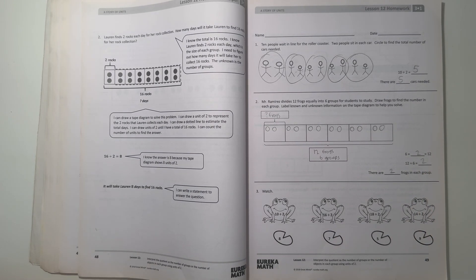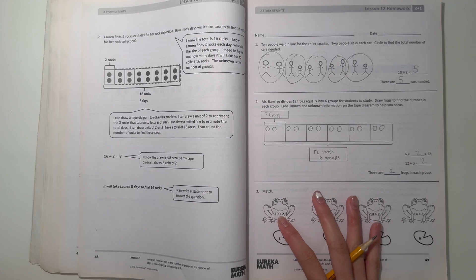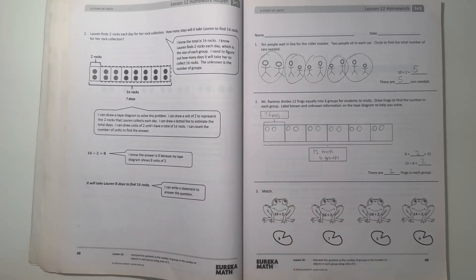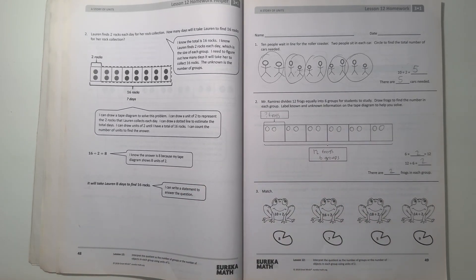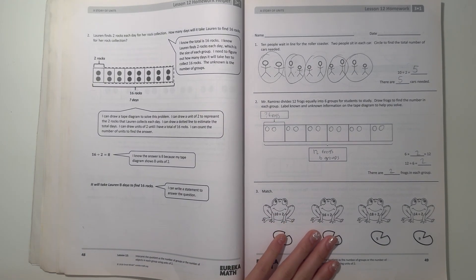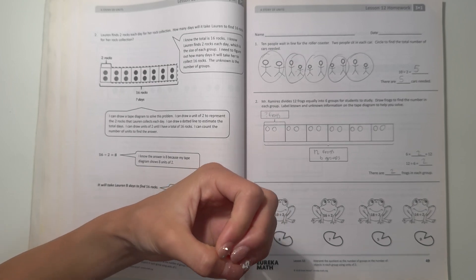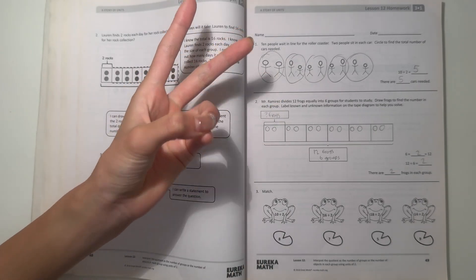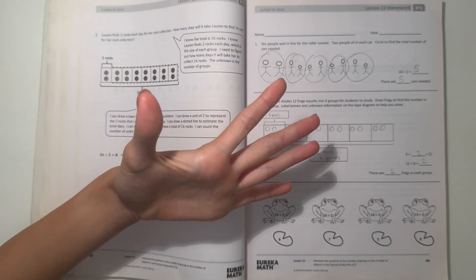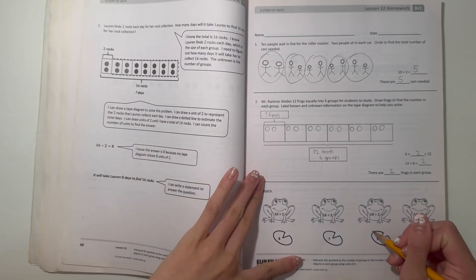Number 3, match. So 10 divided by 2. So basically the easiest way to do this is to just memorize this, but what we can do is we can just keep count by 2. So 2, 4, 6, 8, 10. So that'd be 5. So this would match.